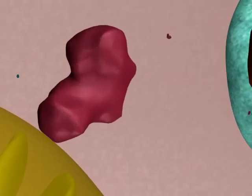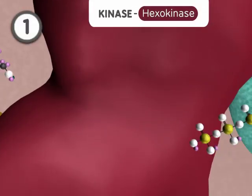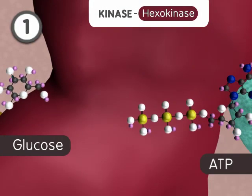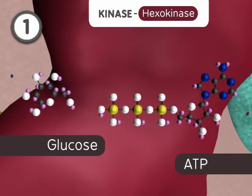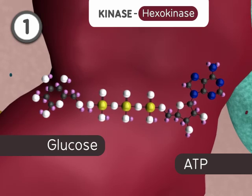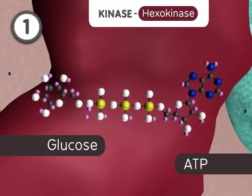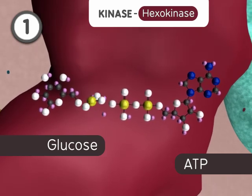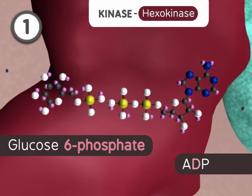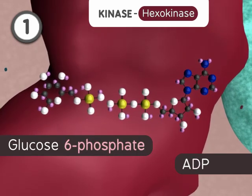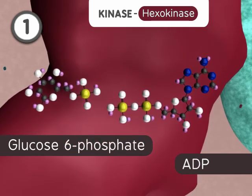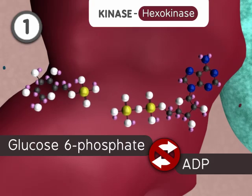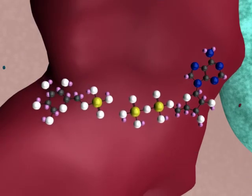First, a kinase reaction adds a phosphate onto glucose to form glucose-6-phosphate. This is one of two energy consumption steps and is an irreversible reaction.